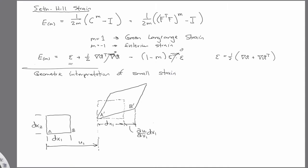And likewise, this distance here is then partial u2 partial x1 dx1, where this would be u2.